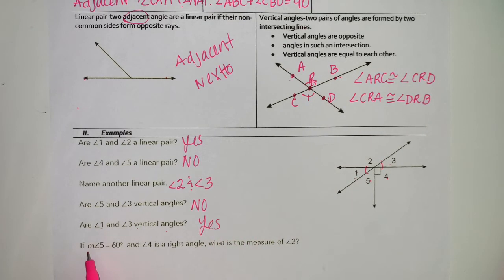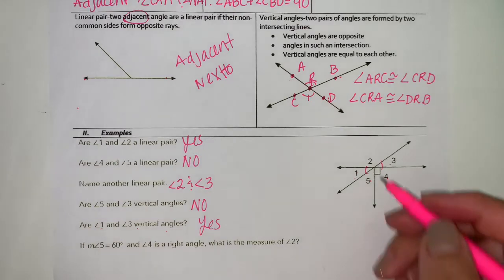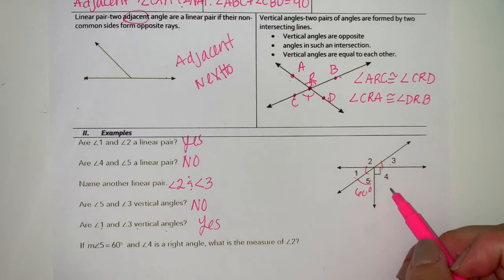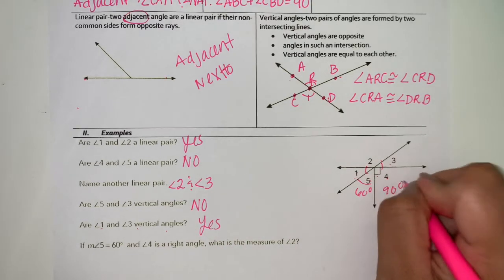And then it says if measure of angle five is 60 degrees and measure of angle four is a right angle, which we know is 90 degrees.